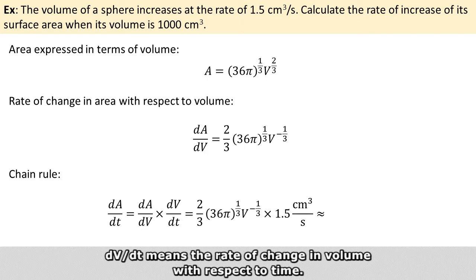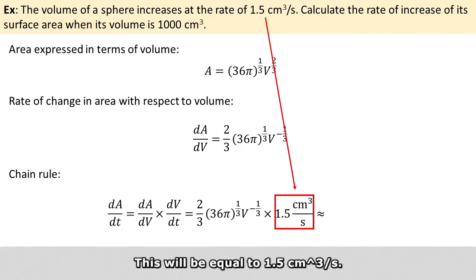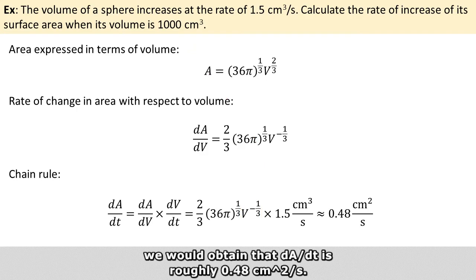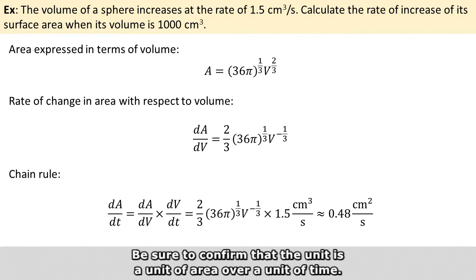So dV/dT means the rate of change in V with respect to time, and this equals 1.5 cubic centimeters per second. The value of V is 1000 cubic centimeters. Putting all the numbers into a calculator, we obtain that dA/dT is roughly 0.48 square centimeters per second. Be sure to confirm that the unit is a unit of area over a unit of time.